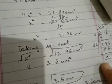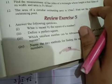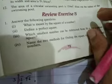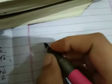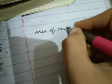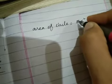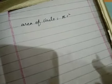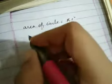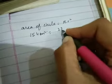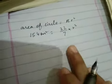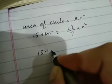In the last question, the area of a circular swimming pool is 154 meter square. Find the radius of that swimming pool. To find the area of a circular region, the formula is: area of circle equals π r². Pi has a fixed value of 22/7. The area is given as 154 meter square, so substituting: 154 = (22/7) × r². To simplify, multiply both sides by 7 and divide by 22.